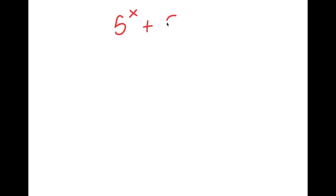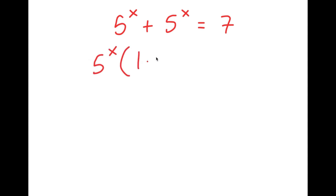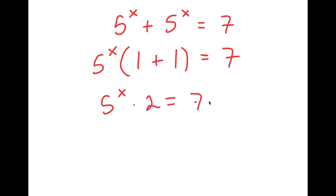In this video, I'm going to solve the equation 5 to the power of x plus 5 to the power of x is equal to 7. To solve this, I'm going to first start by factoring out 5 to the power of x. So I get 5 to the power of x times 1 plus 1 is equal to 7, and 1 plus 1 is 2, so I get 5 to the power of x times 2 is equal to 7.